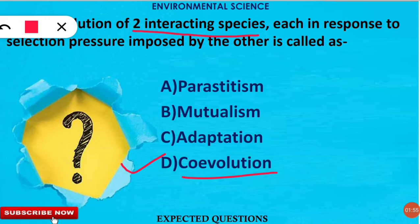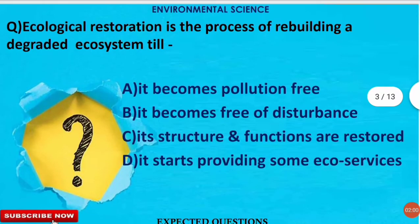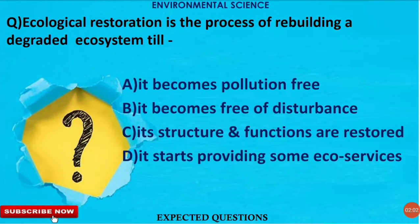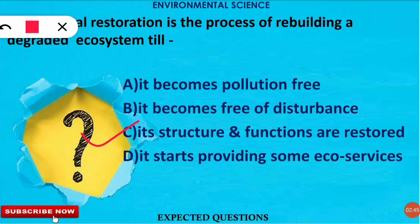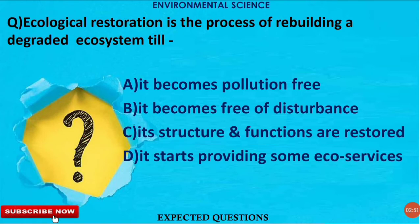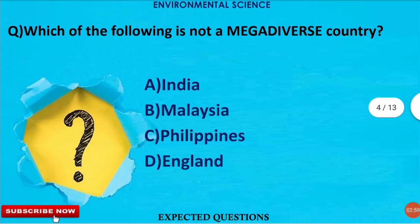The next question is: ecological restoration is the process of rebuilding a degraded ecosystem till what point? The correct option is option C — when a degraded ecosystem regains back its structure and function, it is called ecological restoration.